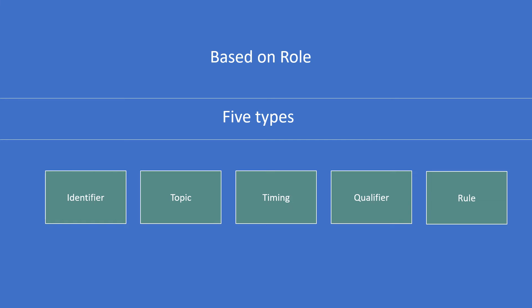How do we easily remember these five variable classes? We can use the five fingers on our hand to quickly recollect the variable classes based on role. Let us go in the order of thumb being the first finger and little finger as the fifth finger.